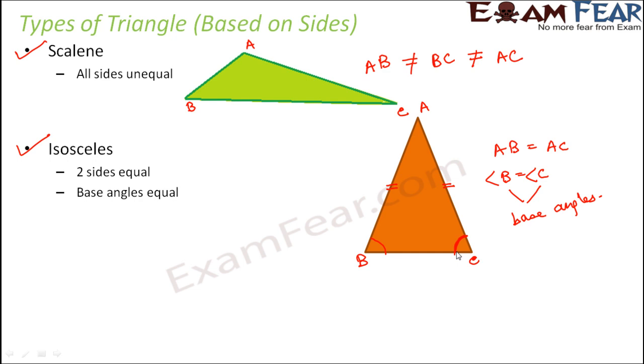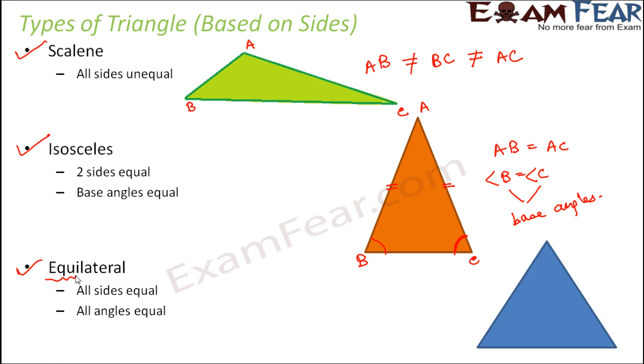Can you guess what would be the third type of triangle? The first type of triangle was scalene where all sides were unequal. Second type was isosceles where two sides are equal. Third is equilateral where all sides are equal. The word equi comes from equal. So all sides equal, all angles equal.